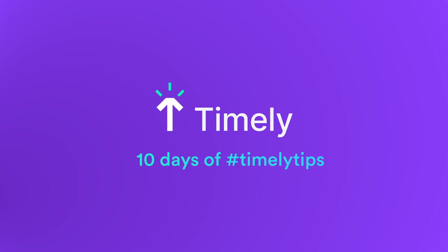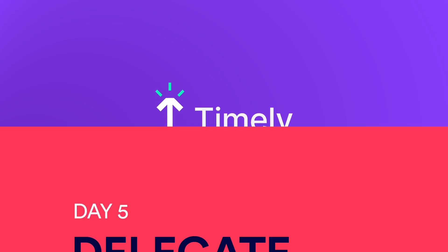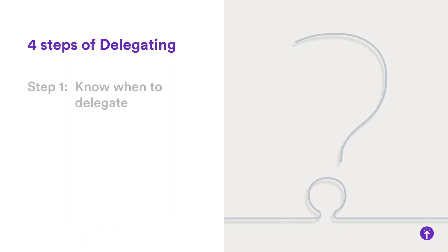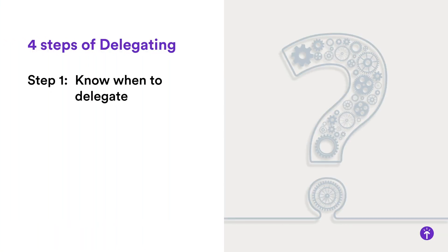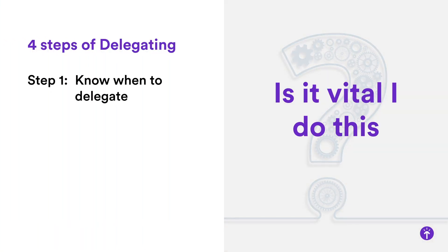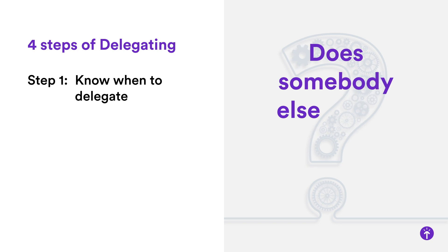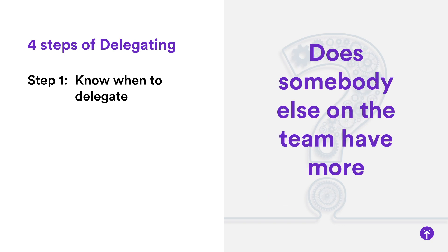Hey everybody, it's the fifth day of this series of timely tips for productivity, and today we're talking about how to delegate. Step 1: Know when to delegate. Ask yourself the following: Is it vital I do this task? Does someone else on the team have more experience?